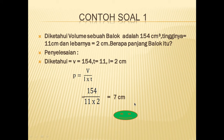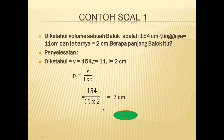Ada pertanyaan? Alhamdulillah, tidak ada. Di sini tadi Miss ketukar menuliskan, tapi hasilnya tetap. Jadi langkah yang kalian lakukan adalah menuliskan dulu unsur yang diketahui, kemudian tuliskan rumusnya, masukkan angkanya, setelah itu hitung, ketemulah jawabannya. Bisa dipahami ya anak-anak? Alhamdulillah. Kalau sudah, kita lanjutkan ke contoh soal yang kedua.